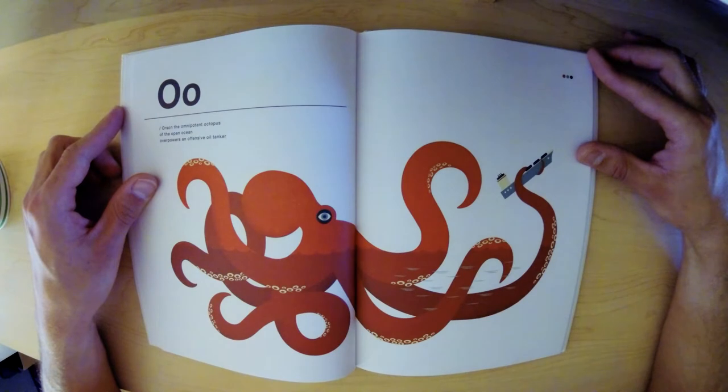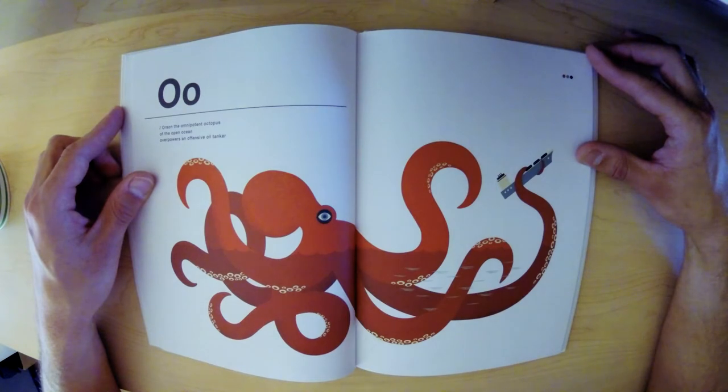O. Orson the omnipotent octopus of the open ocean overpowers an offensive oil tanker.